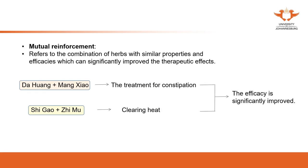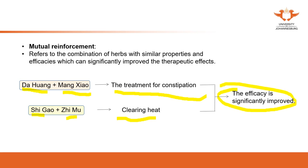The second category is mutual reinforcement. Mutual reinforcement refers to the combination of herbs with similar properties and efficacy, which can significantly improve the therapeutic effects. This also applies in acupuncture — you can use similar points with similar properties and similar actions to improve therapeutic effects. For example, Bai Hu and Mang Xiao for constipation, or Shi Gao and Zhi Mu for clearing heat — adding them together improves the effects.